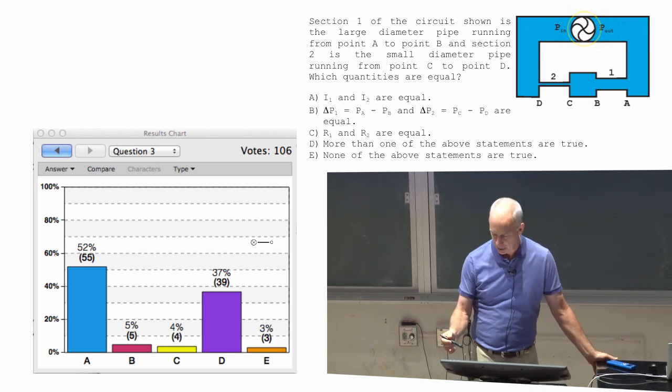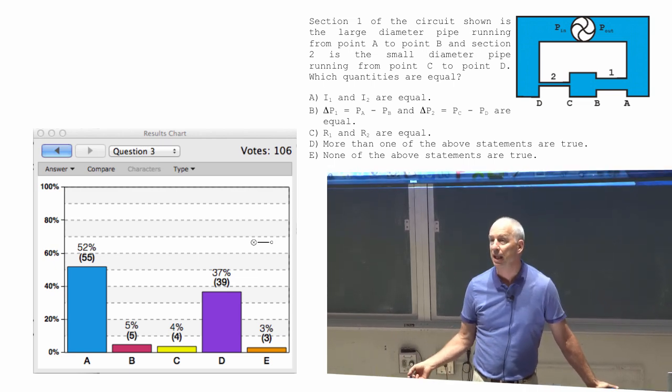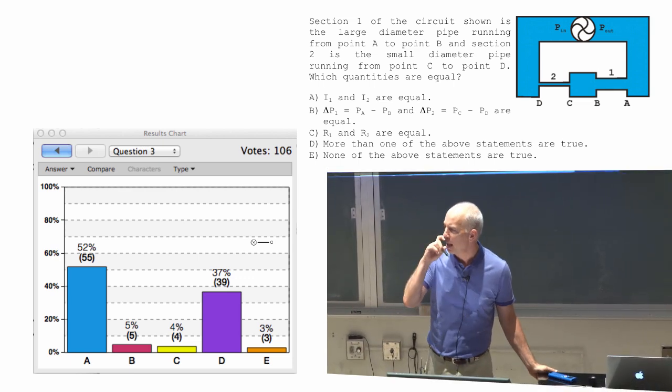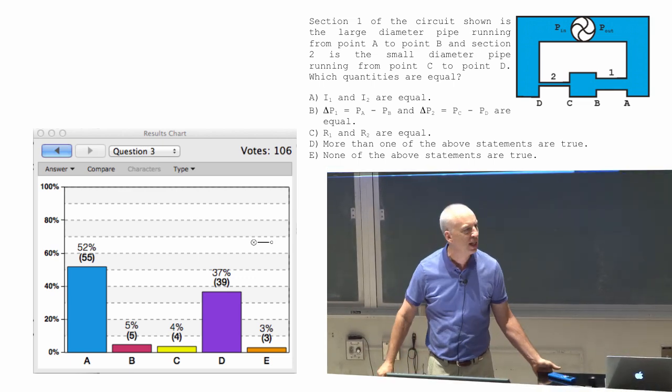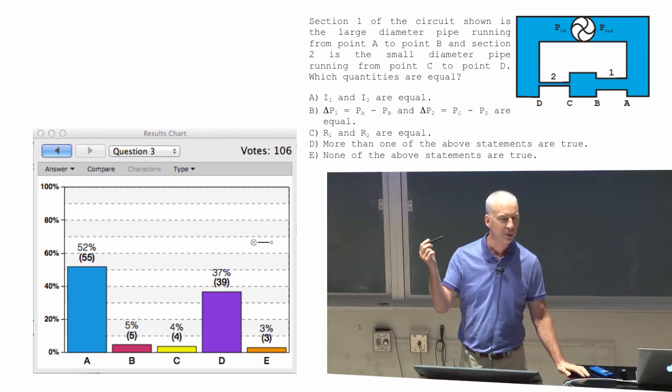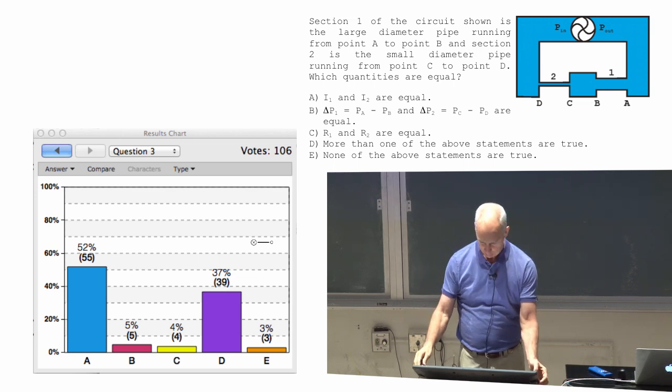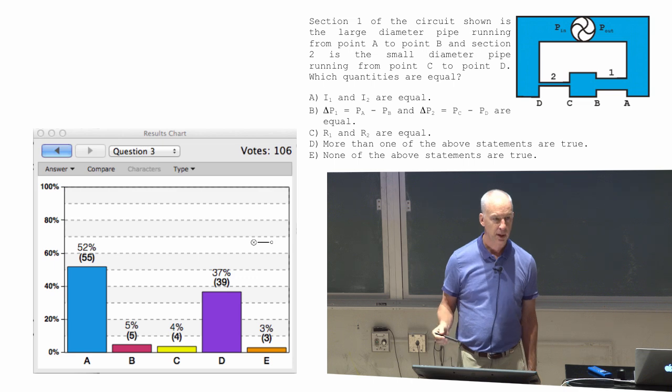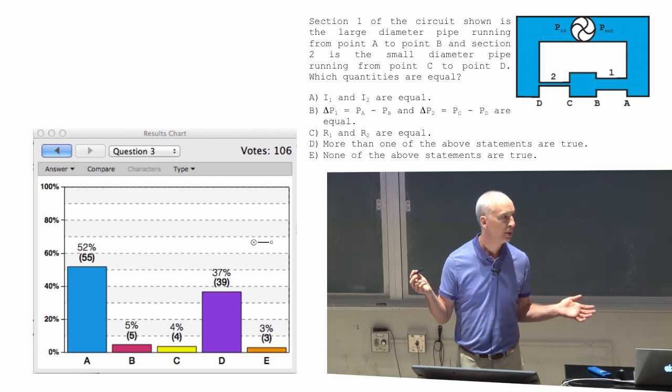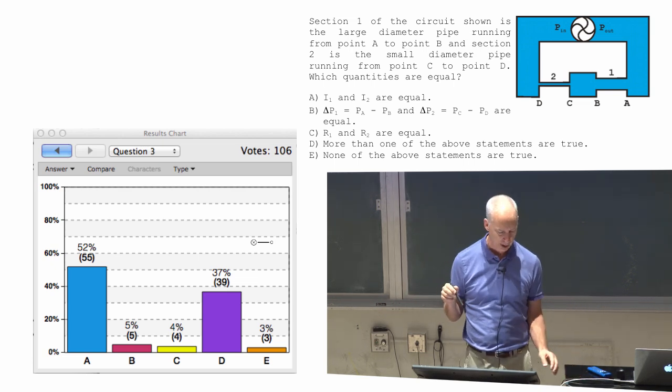So the pump plays a role. If you have a bigger pump, then more energy is being put in. And these resistances have to take more energy out. So how does the resistance take more energy out? How can the thermal energy change get bigger if the resistance doesn't change? What does the thermal energy change depend on? Current times R. If R doesn't change and you put in a bigger pump, current's going to get bigger.